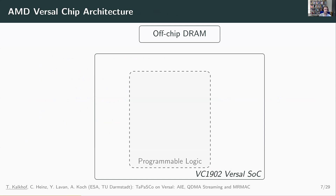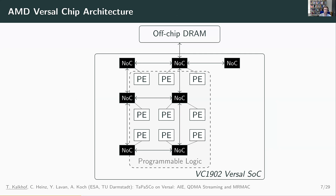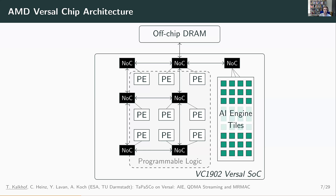Now I want to give some more details on the AMD Versal chip architecture. Here you see the VC1902 Versal SoC, which has some programmable logic and also off-chip DRAM. There's a network-on-chip that connects all different components, hardwired for high-performance access. You can place your PEs in the programmable logic and connect to the NOC so they can access data in off-chip DRAM. The AI engines are also connected to the NOC, along with peripherals like PCIe and 100 gigabit Ethernet. The QDMA core is provided as hard IP, so you do not need to place a DMA engine in your programmable logic.